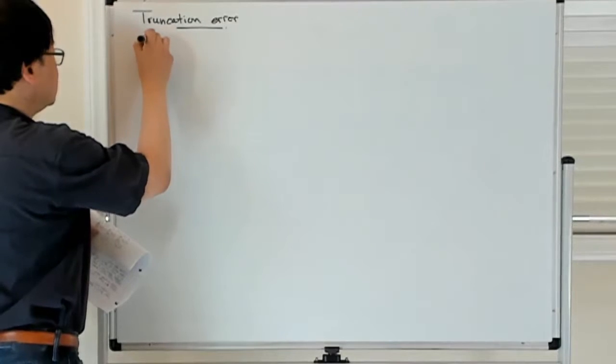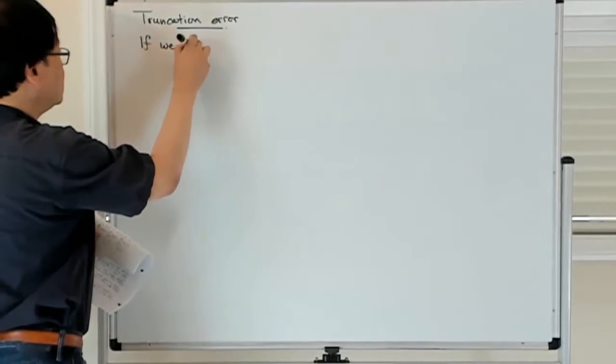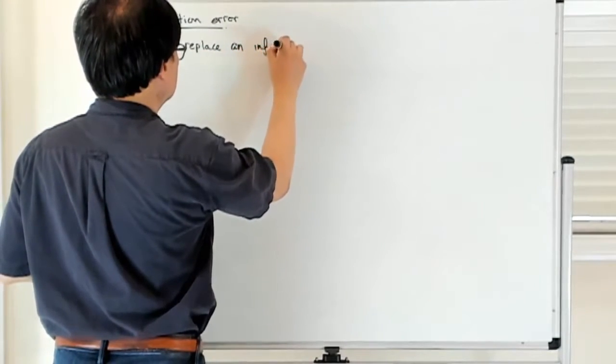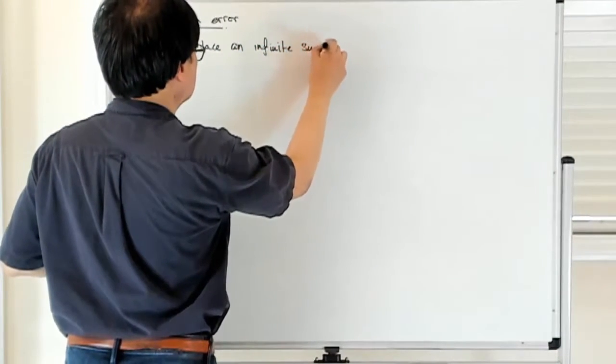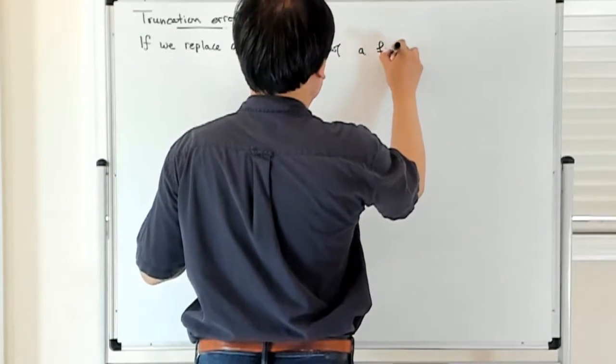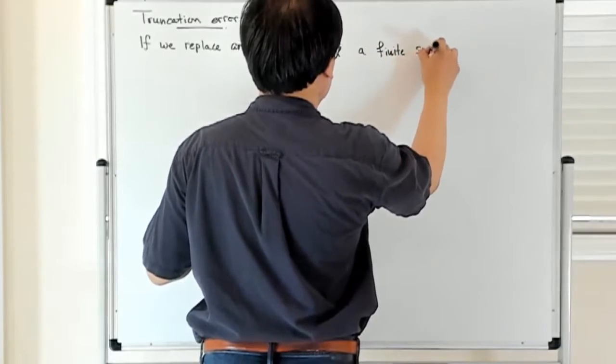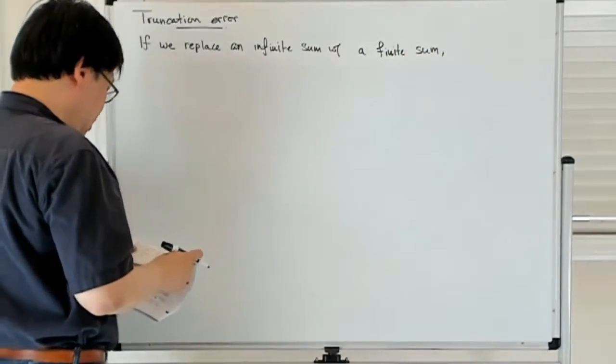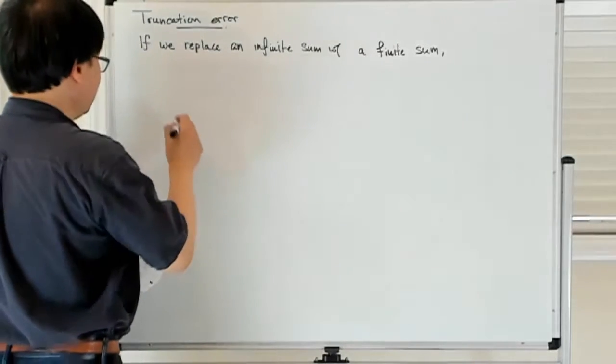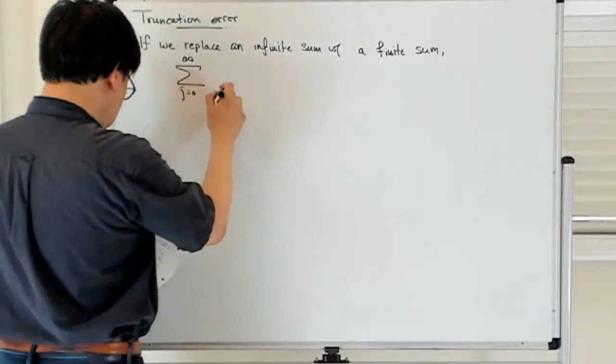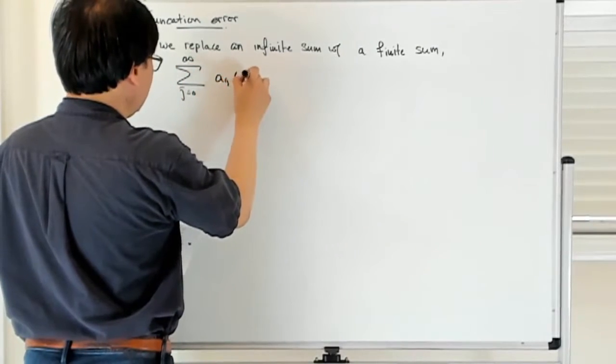So if we replace an infinite sum with a finite sum, then what you're basically doing is truncating this infinite sum and replacing it with a finite sum. So if you have a sum from j equals 0 to infinity of aj of x, and you write this as some finite sum now.